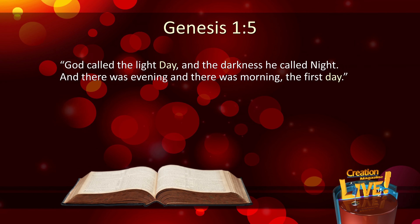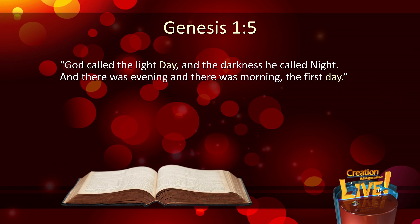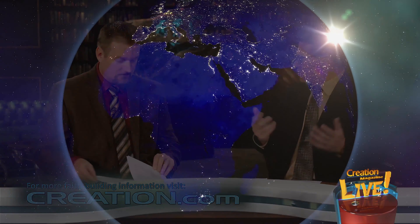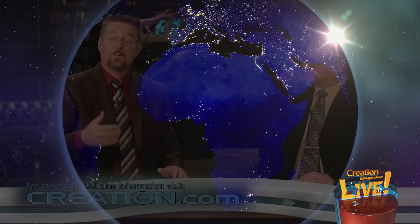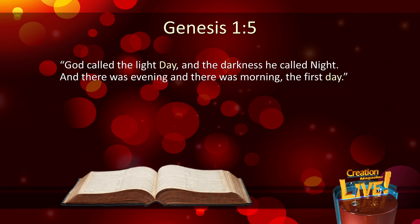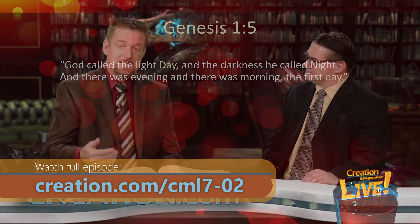God called the light day, and the darkness he called night, and there was evening and there was morning, the first day. In the first instance there's almost a definition: God called the light 'day' — it's the daylight portion of one earth rotation contrasted with the night portion. And in the second instance, from the context, the only meaning it can have is that of an earth rotation day. You cannot make it say something other than a normal day of about 24 hours. If people simply interpret the word in the same way that all other word meanings are interpreted, that should put an end to this controversy among Christians.